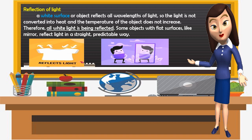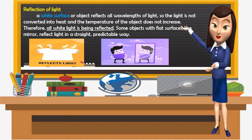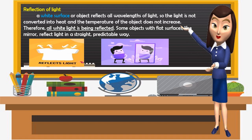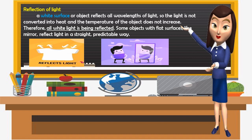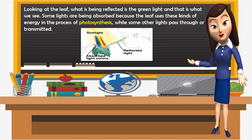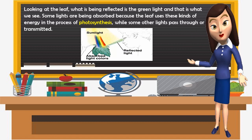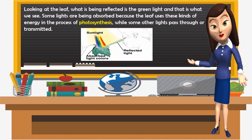Now let's go to reflection of light. A white surface or object reflects all wavelengths of light, so the light is not converted into heat and the temperature of the object does not increase — therefore, all white light is reflected. Some objects with flat surfaces, like a mirror, reflect light in a straight, predictable way. A white t-shirt reflects light, and a mirror reflects light in a straight line. Looking at a leaf, what is being reflected is the green light, and that is what we see. Some light is absorbed because a leaf uses that energy in the process of photosynthesis, while some other light passes through or is transmitted.